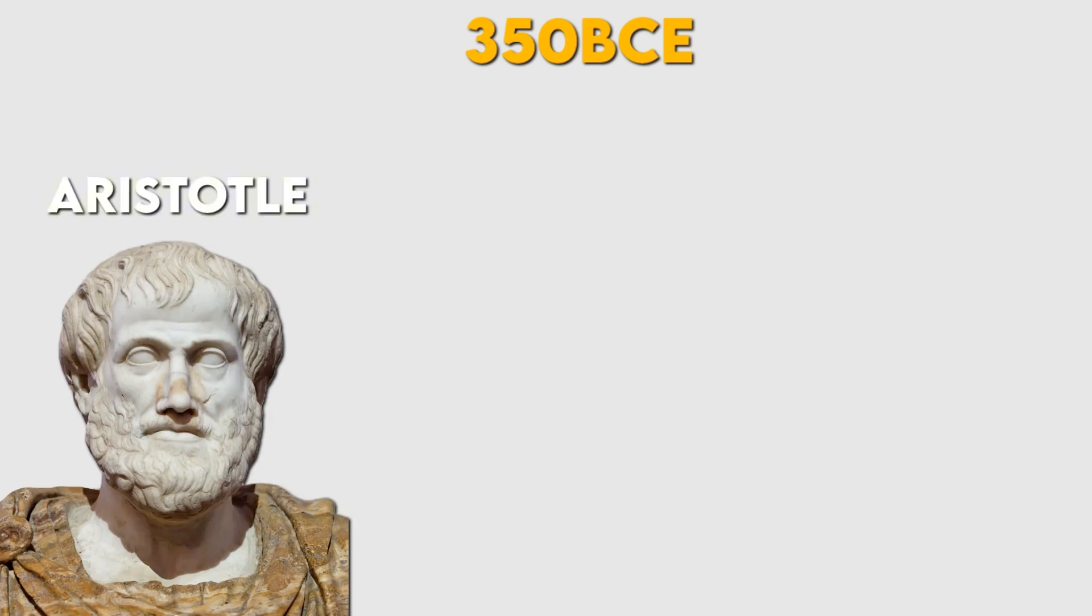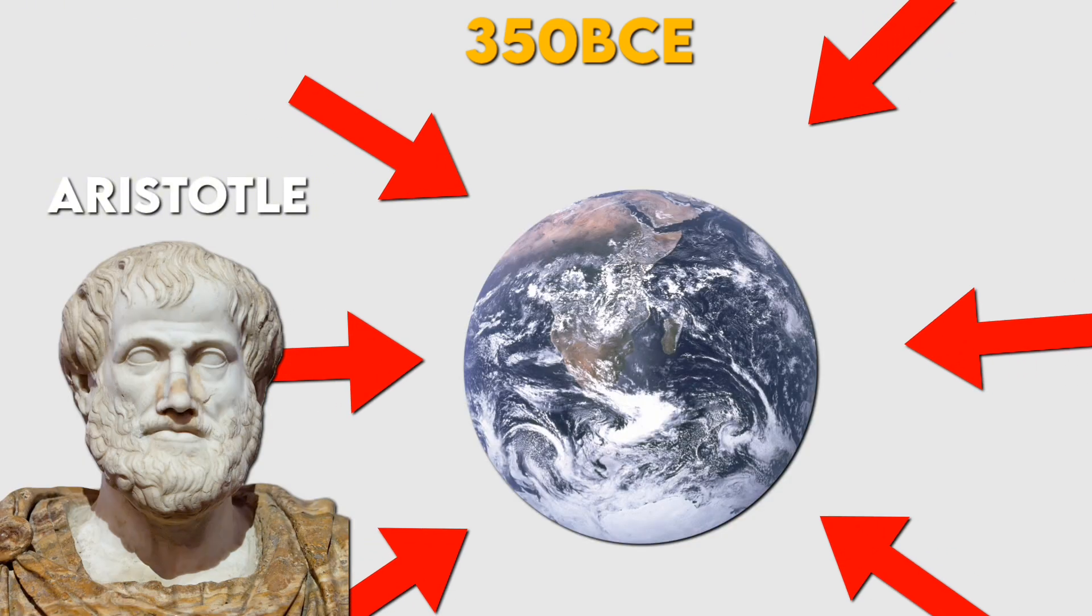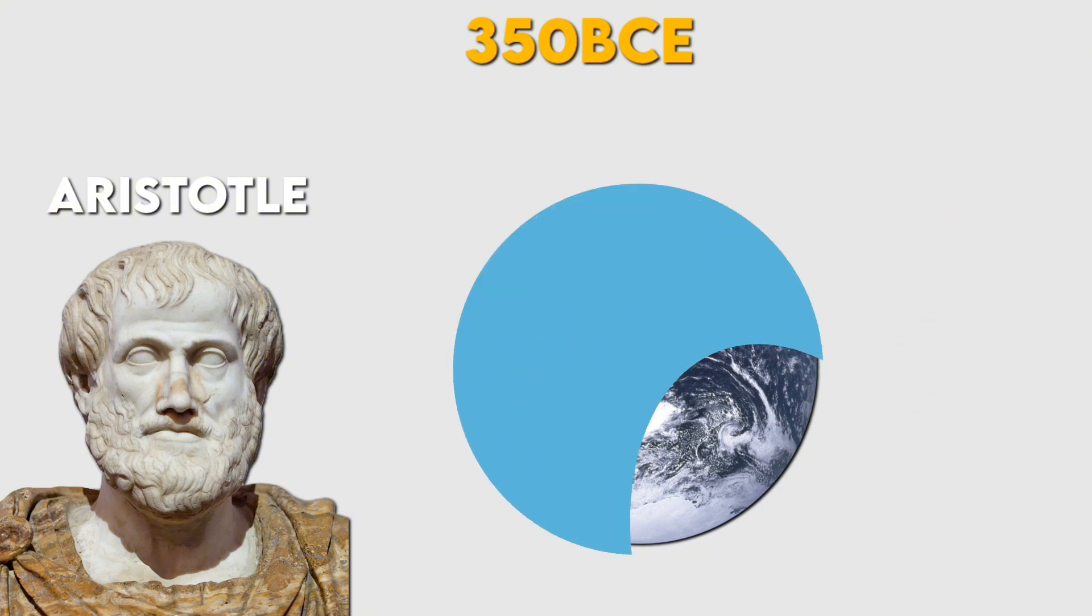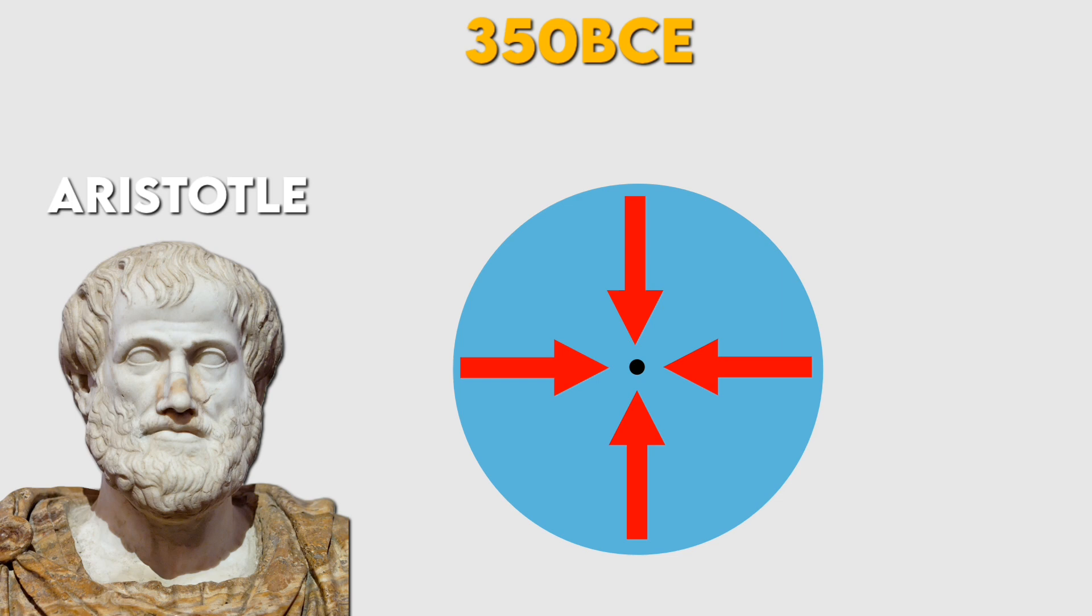Around 350 BCE, the philosopher Aristotle stated, since everything falls toward the Earth, the Earth itself must be resting on something. The only shape in which all parts fall toward a single point is the sphere.